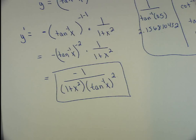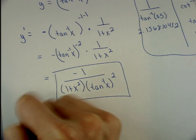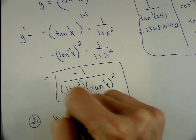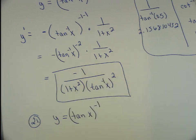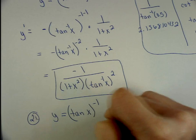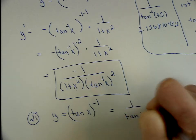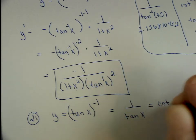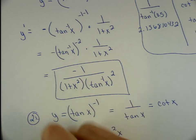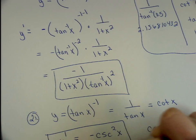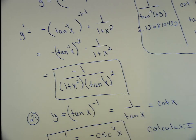Problem #21: y = (tan x)^(−1) is very simple. This equals 1/tan x = cot x. The derivative of cot x is −csc²(x), which is just from Calculus 1 memorization.